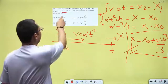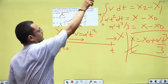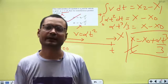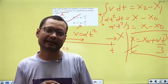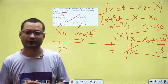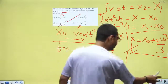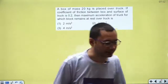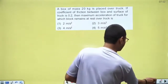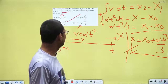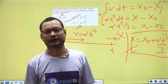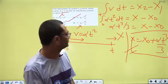कौन सा option है? पहला नहीं, दूसरा नहीं... second option: x = x0 + αt³/3। तो I hope कि आप यह question समझ गए होगे और इसके आगे-पीछे की concept भी समझ गए होगे। यह 3 questions kinematics के थे और बहुत important थे। Mohammed Husain ने बताया — answer is 2। I think Mohammed, you are very much correct! x = x0 + αt³/3। अब आगे बढ़ते हैं next question पर।